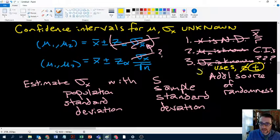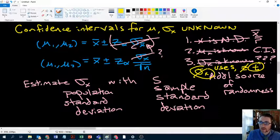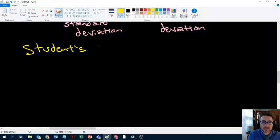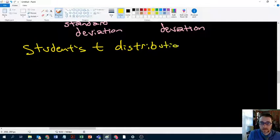So where sigma is out, s is in. Z is out, t is in. What do I mean by this? Well, there is a type of, a class of distributions. So we've spent a lot of time talking about the normal distribution, but there's another distribution called the student's t distribution.